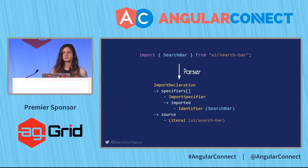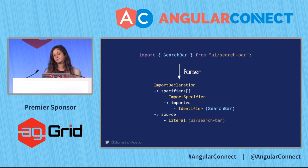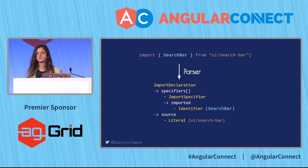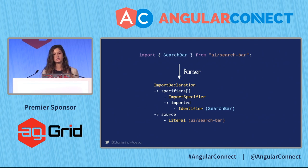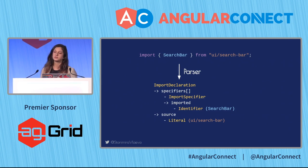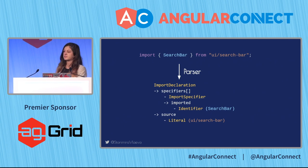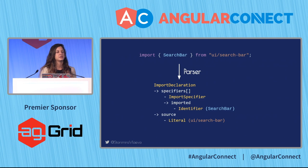As an example, if we have this import declaration and run it through the parser, we get a data structure where the root node is of type ImportDeclaration. The import declaration has certain specifiers — the specifiers are the things we're importing from that path, in this case a single import called SearchBar. We also have a source inside the import declaration; the source is of type Literal and the value is 'ui/search-bar'. The parser takes your text source code and generates a tree containing the different nodes inside your source.